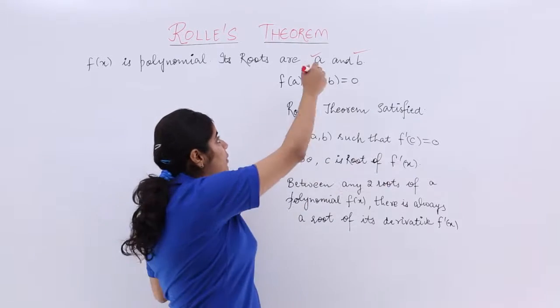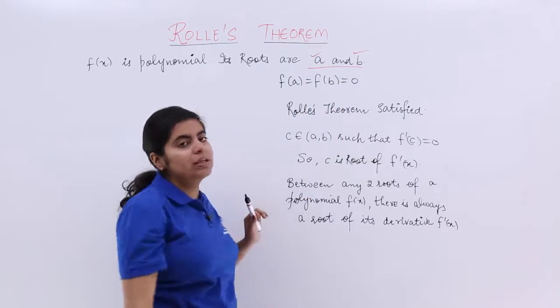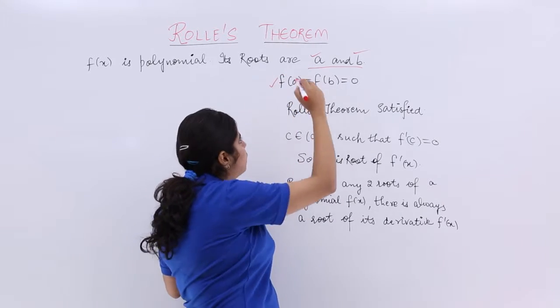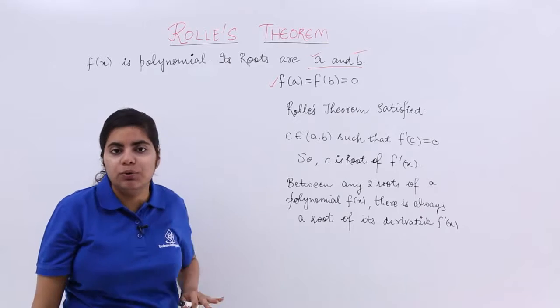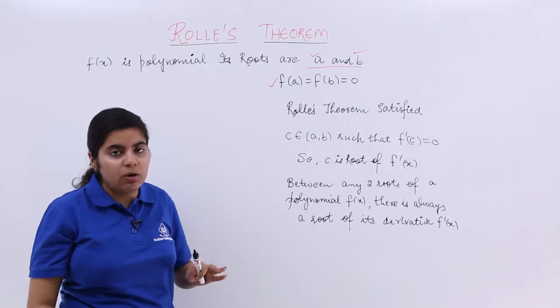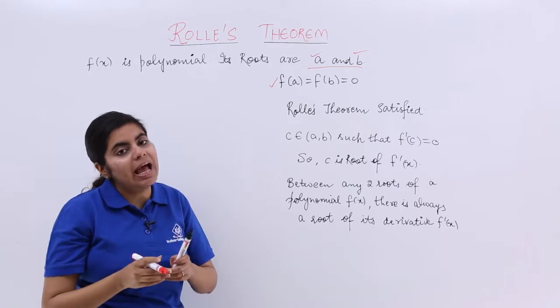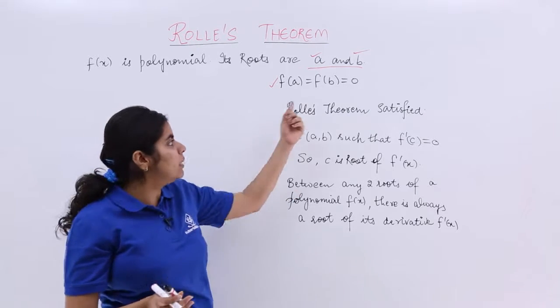So if a and b are the roots of the polynomial, when put in f(x), they give me 0. That means f(a) and f(b) both are equal to 0. So now, what I have: I have a polynomial function, two roots, and the roots when put in the polynomial function make its value 0.